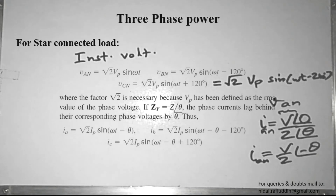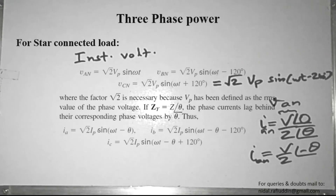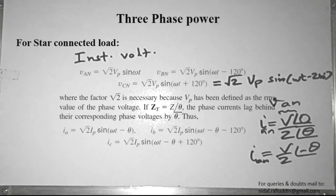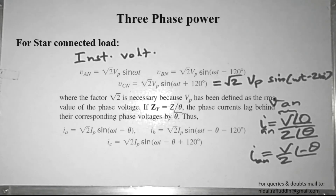The instantaneous currents can be written as: ia = root 2 · Ip · sin(ωt − θ), ib = root 2 · Ip · sin(ωt − θ − 120°), and ic = root 2 · Ip · sin(ωt − θ + 120°) or equivalently sin(ωt − θ − 240°), where Ip is the rms value of the phase current.